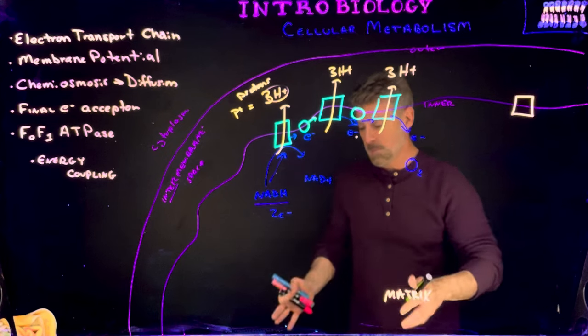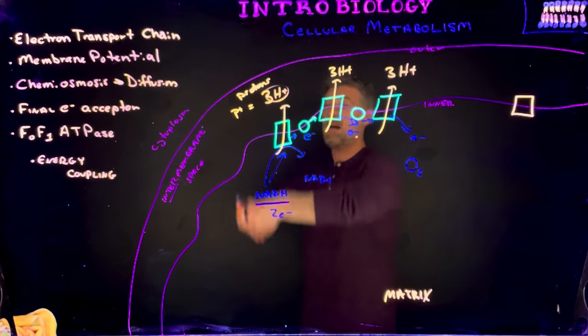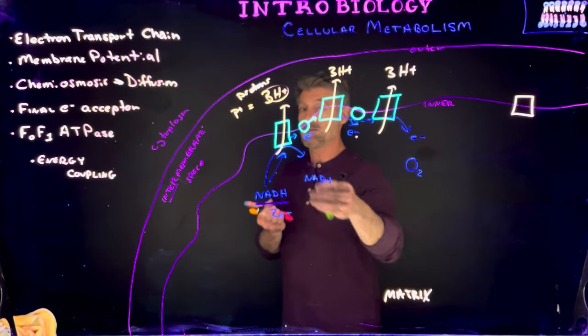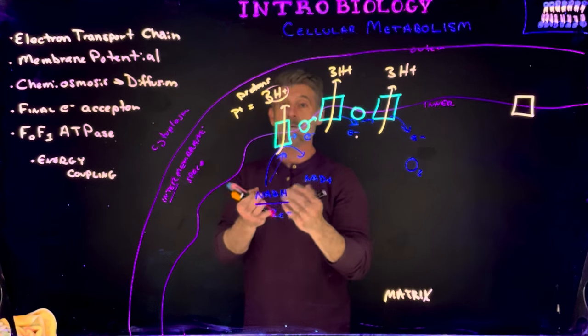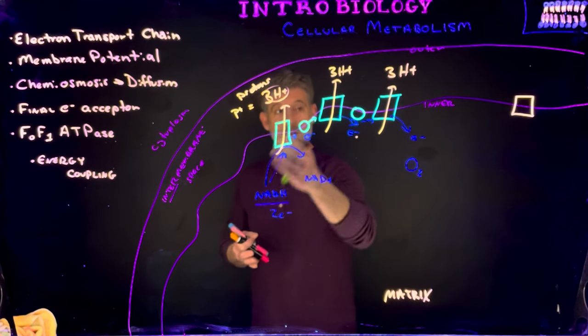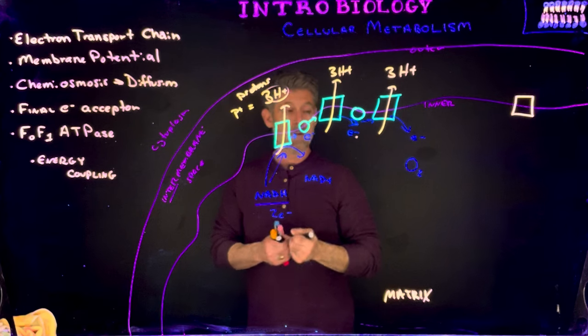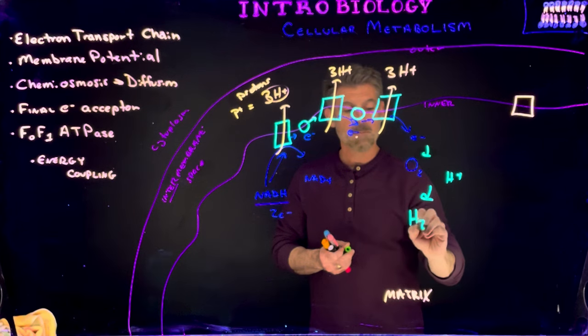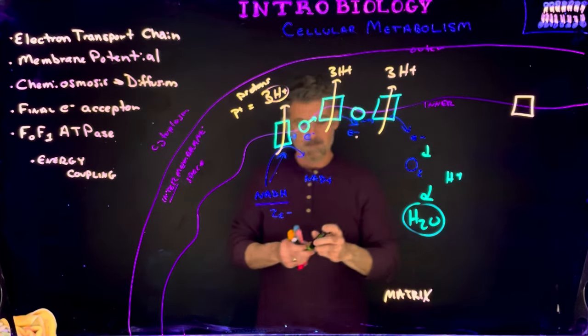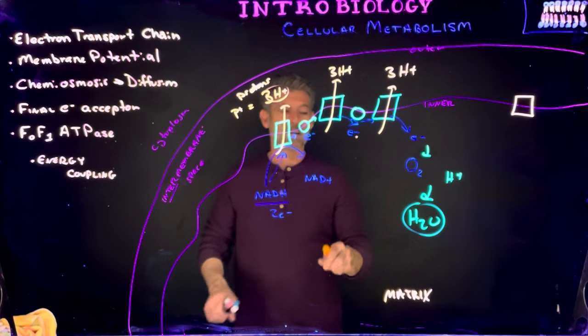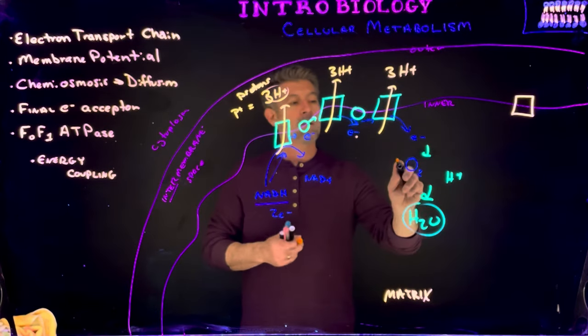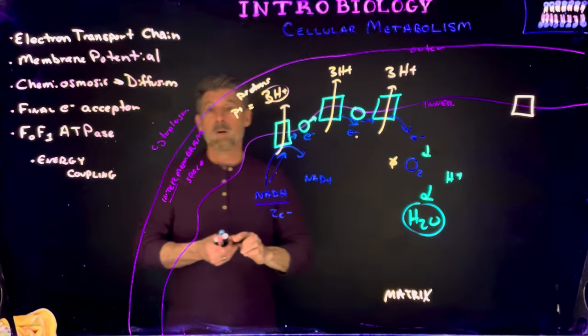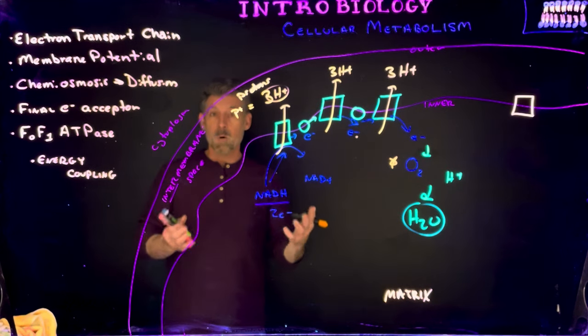And the proteins are using the energy from the NADH to act as active transport pumps. They're going to pump, push, just like a water pump could pull water from underground up into your house. That requires energy. The energy comes from electricity, which is the flow of electrons, actually. And that is the same thing that's happening here, just at the cellular level. So electrons are flowing from NADH to oxygen. When oxygen picks up these extra electrons, it actually combines with some protons and forms water molecules.